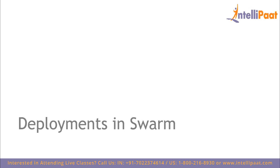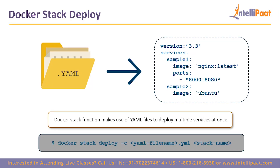Now let's go ahead and see how to perform more complex deployments in a swarm and what other operations we can perform after deployment. We saw how to deploy a service in Docker Swarm using docker services, but what happens when we want to deploy multiple services at the same time? In real-life applications we'll have to deploy multiple services — a database, a web server, a front-end — and we need to deploy them together. When we want to deploy multiple applications, we can use a function that Docker provides called the docker stack function. It makes use of a YAML file — a metadata file — to deploy multiple services at once.